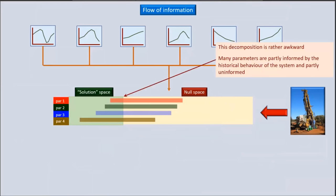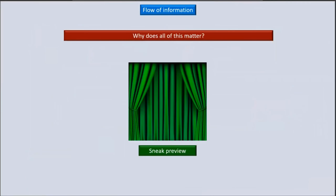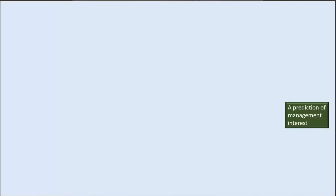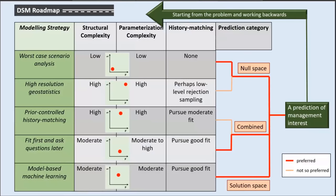The solution space and null space split is awkward — any single parameter can reside partly on one side and partly on the other. It can be shown mathematically that any simplification in model design should maintain the integrity of the location of the parameter solution space boundary, as this eliminates predictive bias. This gives us the basis for a model design framework. In the spirit of starting from the problem and working backwards, we can develop a model design roadmap that creates a path along which information can flow to its destination of decision-critical predictions.